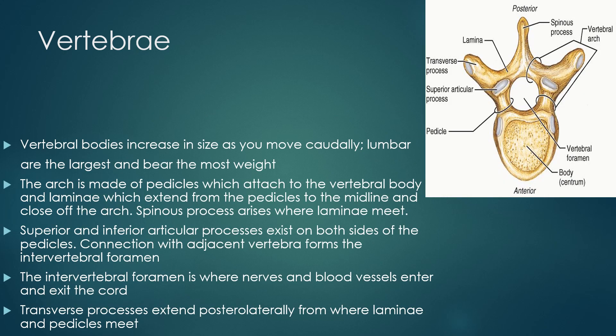Looking at an individual vertebra, you see the vertebral body anteriorly, the components of the vertebral arch posteriorly, and the vertebral foramen in the center where the spinal cord lies. The vertebral bodies are largest in the lumbar portion of the spine as they bear the most weight. As you move up the column, the thoracic and cervical vertebral bodies are much smaller.